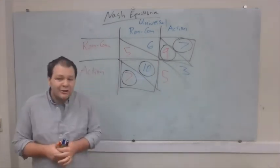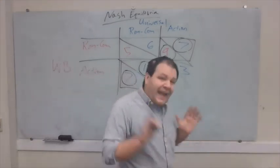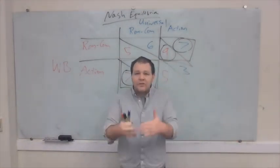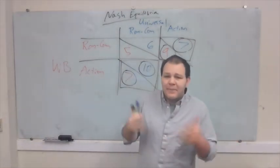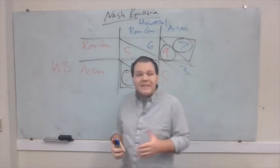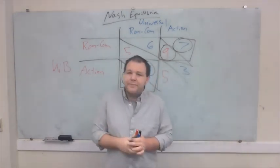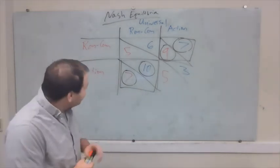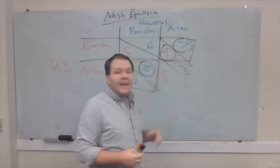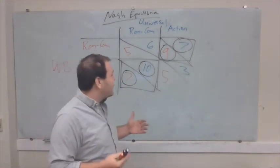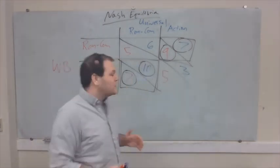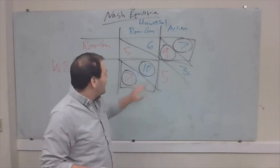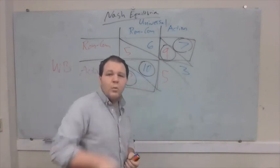One final note about Nash Equilibrium: any strategy that's dominant — any time we can use dominance or iterated dominance to find some outcome — that strategy has to be a Nash Equilibrium. Nash Equilibrium is a weaker concept than domination because it can't tell us for sure what's going to happen; it can just tell us whether any particular outcome is stable. In other words, once an outcome is determined, expected by everyone, whether everyone will play along.